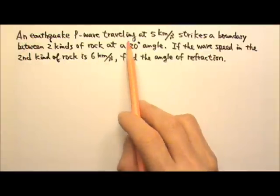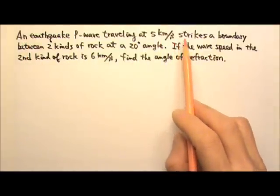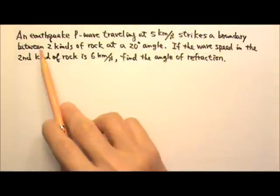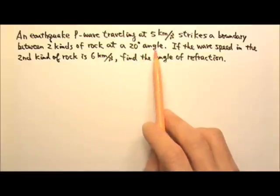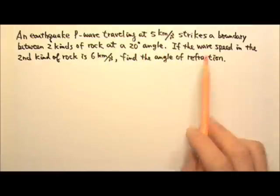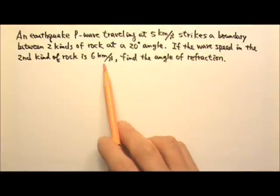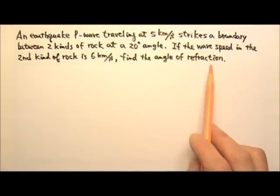An earthquake P-wave traveling at 5 kilometers per second strikes a boundary between two kinds of rock at a 20 degree angle. If the wave speed in the second kind of rock is 6 kilometers per second, find the angle of refraction.